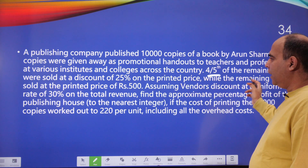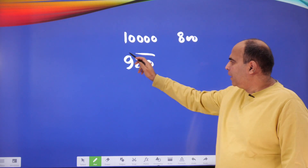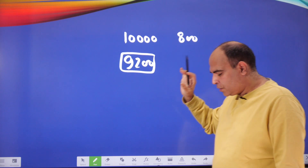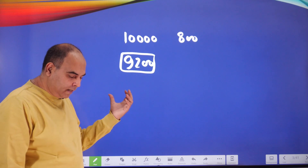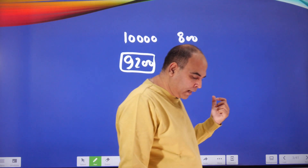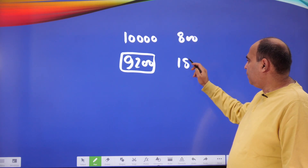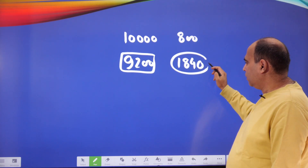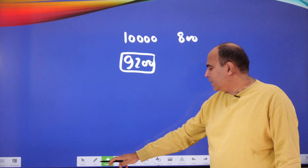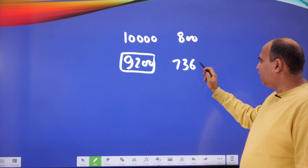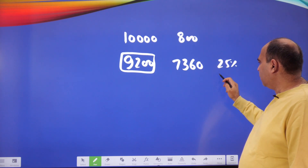Four-fifths of the remaining copies were sold at a discount of 25% on the printed price. One-fifth of 9,200 is 1,840, so four-fifths is 7,360. Therefore, 7,360 units are sold at a 25% discount on the printed price.